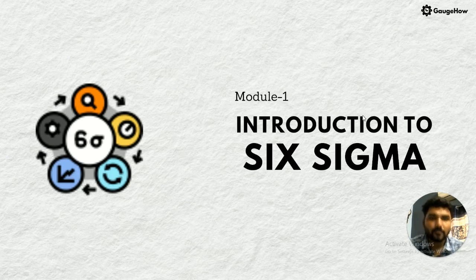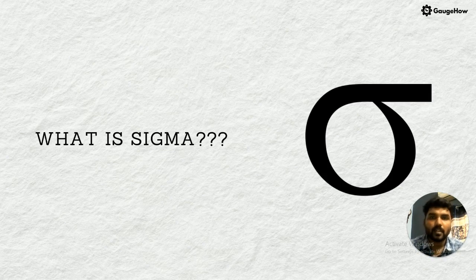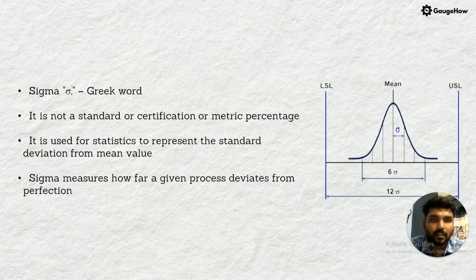Here we go, this is module one, introduction to Six Sigma. Sigma is not a kind of metric or standard or any percentage. It is in simple term one process how you can calculate the efficiency. Sigma is an efficient way to measure the efficiency of the product, how much the process is from the perfection or output.